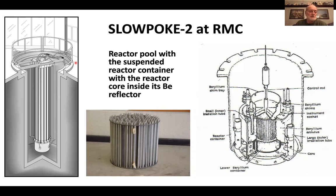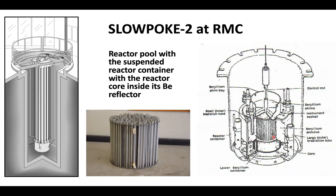Looking at the image on the left, this is the installation at RMC. We're at the floor level here. There's water in this very deep pool all the way to the bottom, where the reactor core is inside the reactor container suspended from I-beams. The depth of water is designed so people can be in the reactor room at any power level with radiation levels the same as outside the building. The reactor core has about 200 fuel pins inside a bottom section of the reactor container, surrounded by an annulus of beryllium as a reflector, along with a slab at the bottom that bounces neutrons back into the core area.